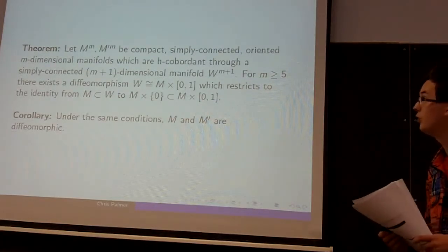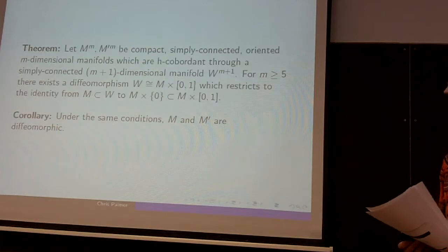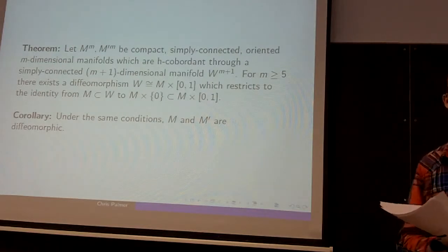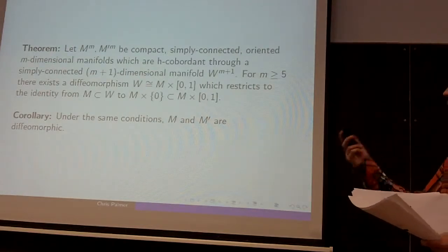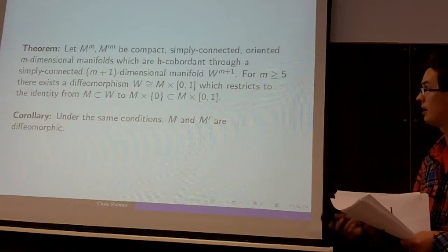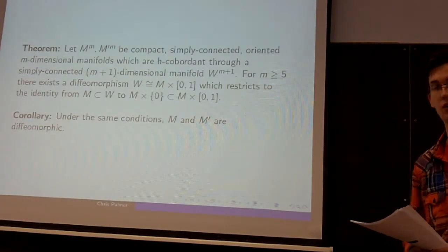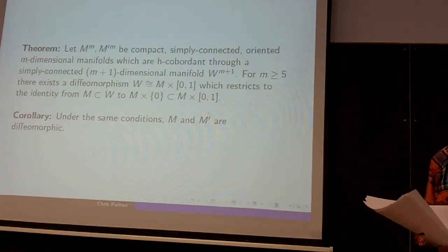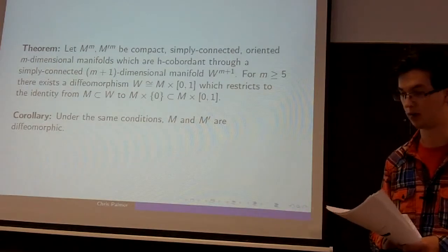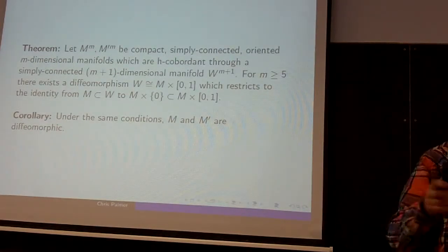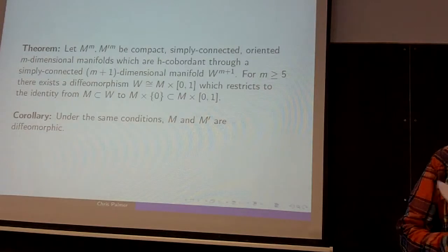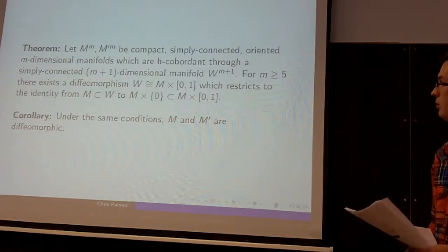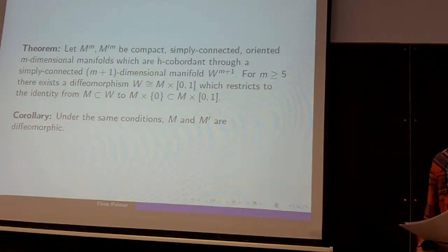So the H-cobordism theorem says: if we have two compact, simply connected manifolds, M and M', of the same dimension m, which are H-cobordant through a simply connected manifold W of one dimension higher, and providing that m is greater or equal to 5, we can show that there's a diffeomorphism between W and this trivial cobordism. And we can also choose the diffeomorphism to act as the identity when it's restricted to M as one of the boundary components of W and M as the lower boundary component of the Cartesian product of M with a closed interval [0, 1].